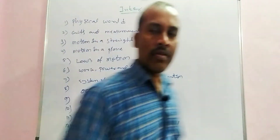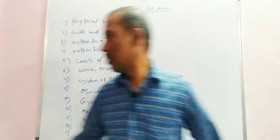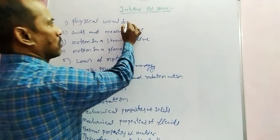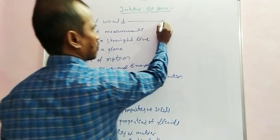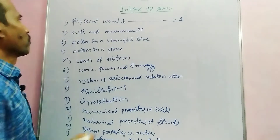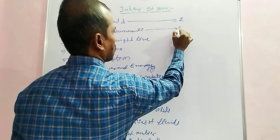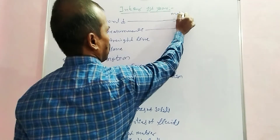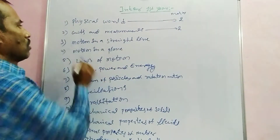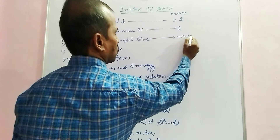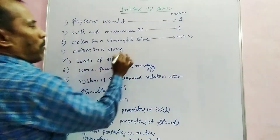This is the first-year syllabus with 14 topics. The weightage marks are as follows: the first lesson, Physical World, carries 2 marks. The second topic, Units and Measurements, also carries 2 marks. Motion in a Straight Line carries 4 marks.